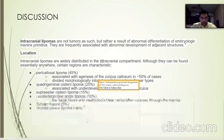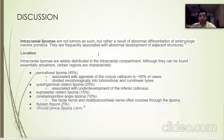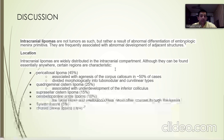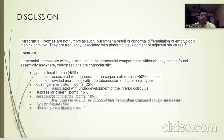Intracranial lipomas are not tumors as such, but rather result from abnormal differentiation of the embryological meninx primitiva. They are frequently associated with abnormal development of adjacent structures. Location-wise, pericallosal lipomas account for 45% of cases and are associated with agenesis of the corpus callosum, divided morphologically into tubulonodular and curvilinear types. Quadrigeminal cisterns account for 25%, suprasellar cistern lipomas 15%, and in cerebellopontine angle lipomas the facial and vestibular nerves traverse through the lipoma. Sylvian and choroid plexus lipomas are quite rare.